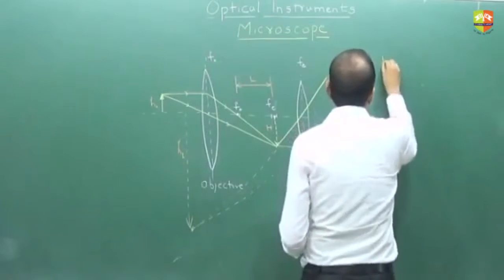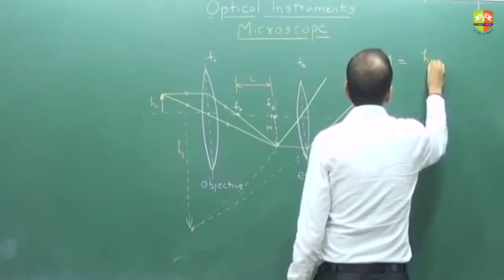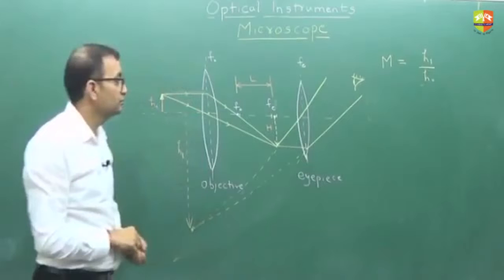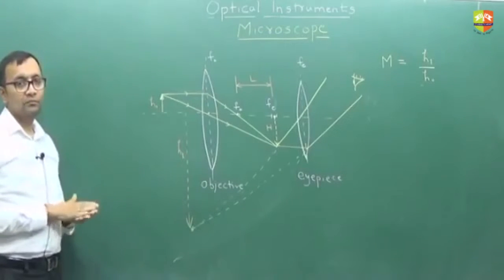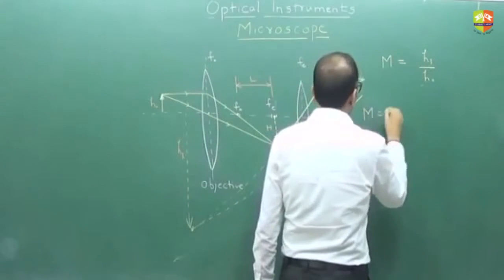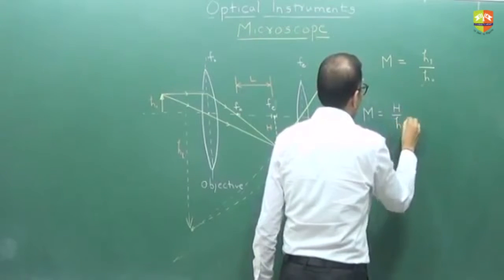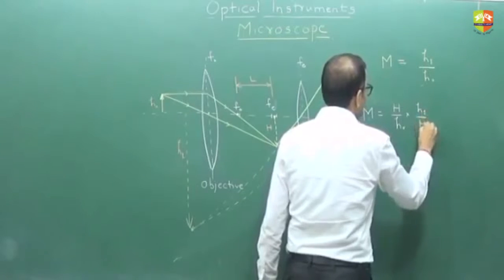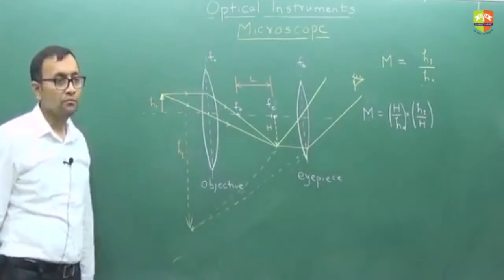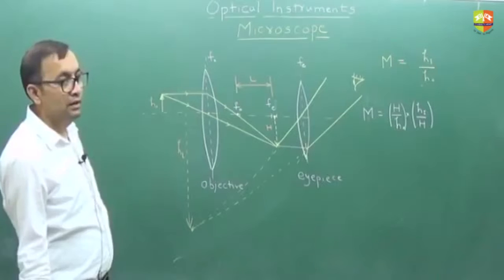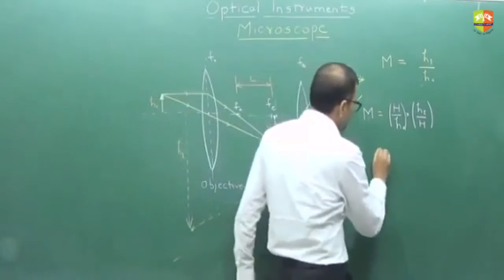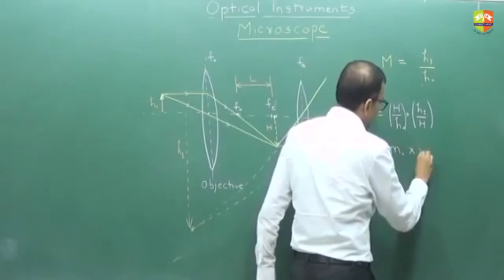The total magnification formula: complete magnification equals HI divided by HO. I can rearrange that as H by HO multiplied by HI by H. H by HO is the magnification of the objective. HI by H is the magnification of the eyepiece. So this can be written as MO multiplied by ME.